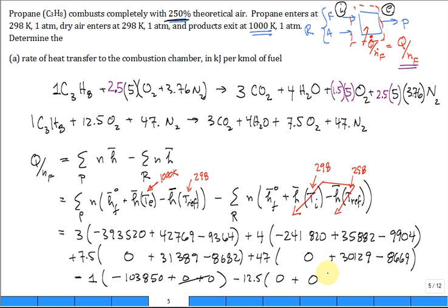How about minus for the oxygen, 12.5, enthalpy formation 0, plus, well it comes in at 25°C so it's 0. And then I do the nitrogen in the reactants, it's going to be 47. The enthalpy of formation is 0, and the deviation from 25°C is 0. So a lot of times there is a lot of 0s, which is good.